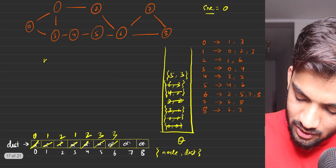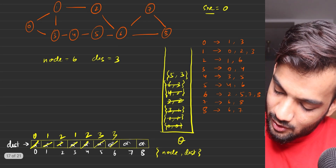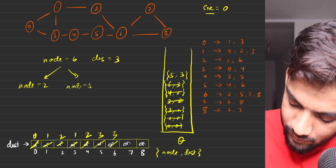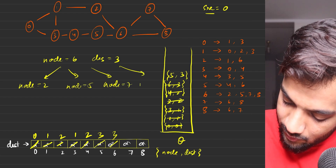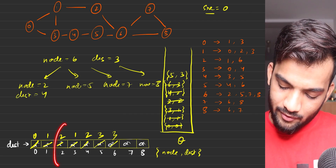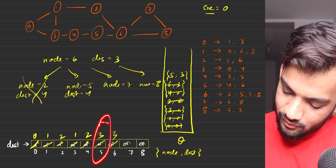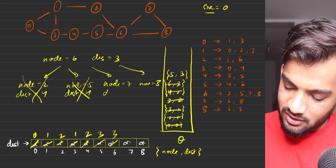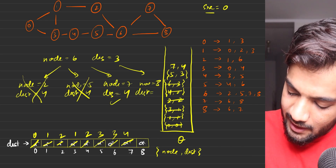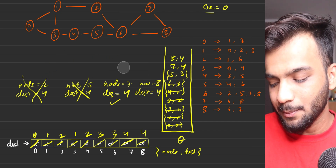Next is node six at distance three. From node six you can reach nodes two, five, seven, and eight. For node two, distance would be four — already reached at two, discarded. For node five, distance would be four — already reached at three, discarded. Node seven is at infinity, so we push seven comma four. Node eight is at infinity, so we push eight comma four. Distance array updated.